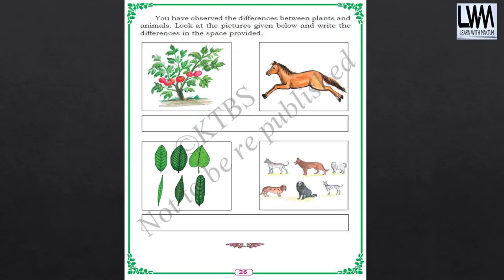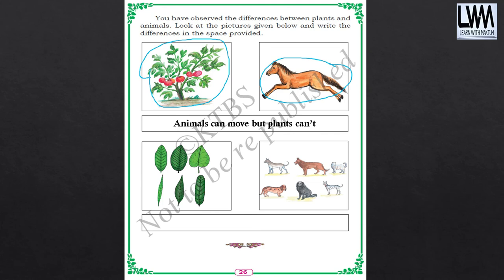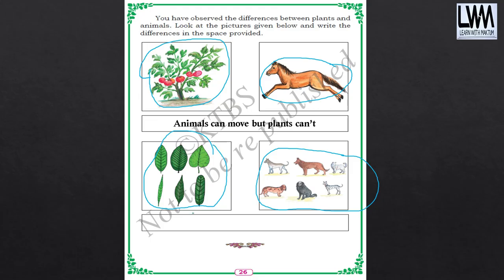Let's see the differences now. If you see here, this animal can walk and run. But the plant — is it going to run? Is it going to move? No. That is the difference: animals can move, but plants cannot. Next, if you see their color is different — there is some variation. Plants are all green only. Generally, all plants are green in color. There are some other plants which are different colors, but those are exceptions. Generally, all plants are green in color.